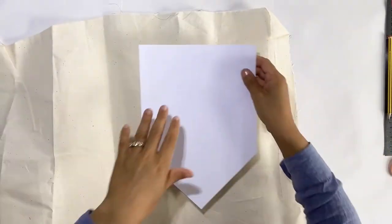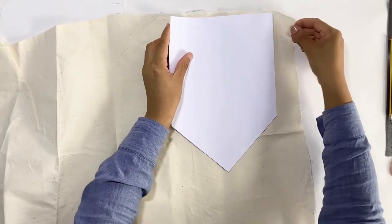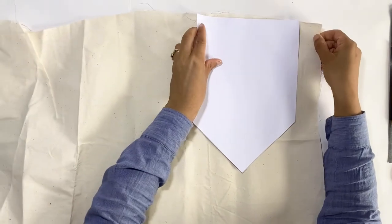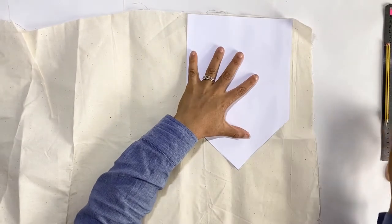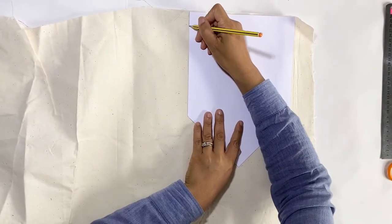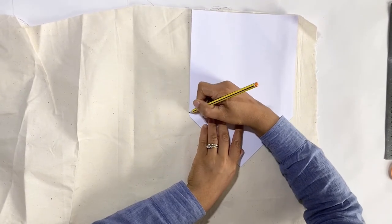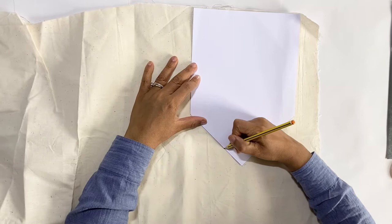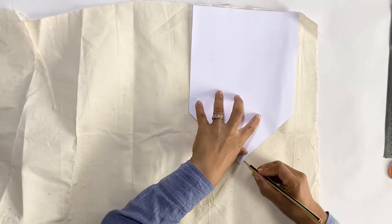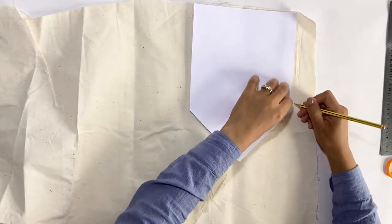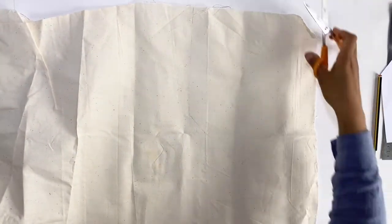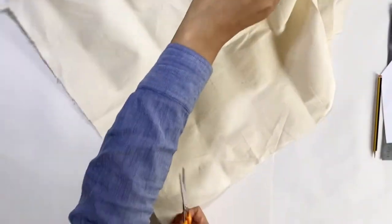Place your template on top of your Calico and using a pencil just gently mark out the area around the template. And now just cut out your flag shape.